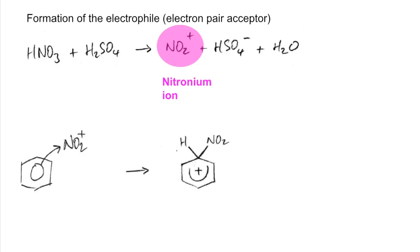We get this unstable intermediate. Really important that you cover five carbons with this partial pi electron cloud and don't forget the plus sign in the middle. It stabilizes itself by losing the H as H+, and a pair of electrons in this bond goes back in to reform the pi electron cloud. The products are nitrobenzene and an H+ ion.